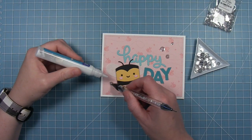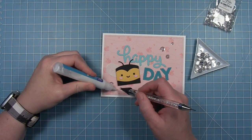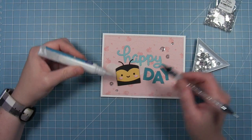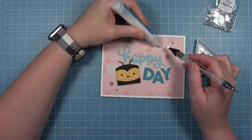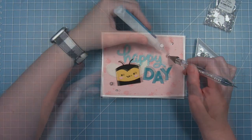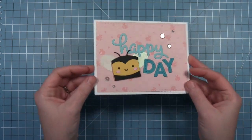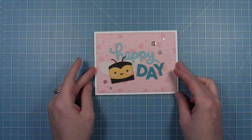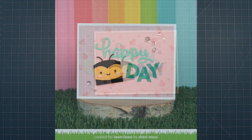Then I added a few clear sequins to the card just for some extra shine and a little extra interest. Now this card is all finished and I just love that shimmer on those pearlescent vellum wings when they catch the light.